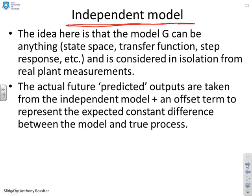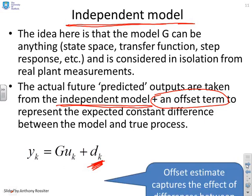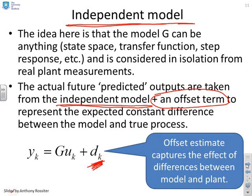And the actual future predicted outputs are taken solely by looking at the independent model. So you say what future inputs am I going to do? What past inputs have I got? You stick them in your independent model and you find out what it gives you. But then you add an offset term which represents the expected difference between the model and the true process. And what people will normally do is say this offset term is essentially the disturbance term, exactly the same as we had for the step response model.